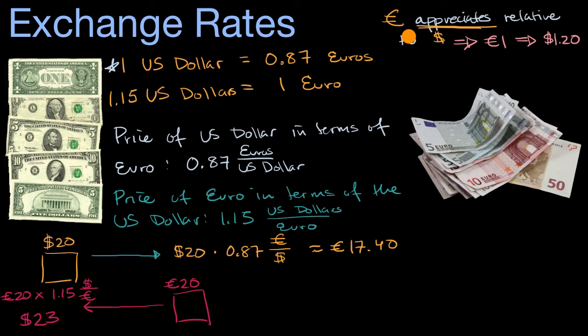If someone said the dollar appreciates relative to the euro, then it would go the other way around. That might be one US dollar is now equivalent to 0.9 euros, or maybe one euro, or 1.05 euros.